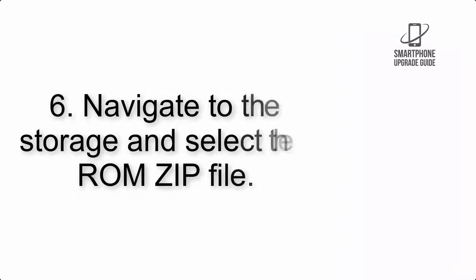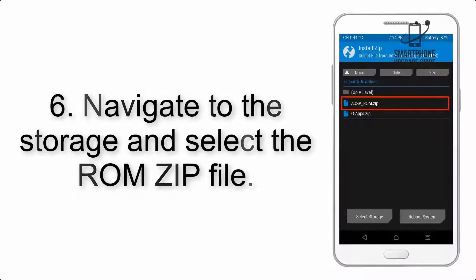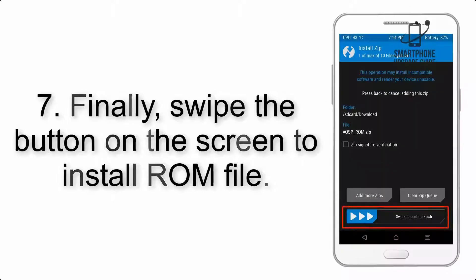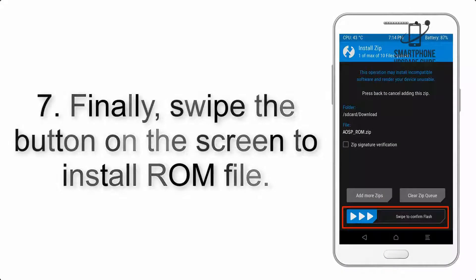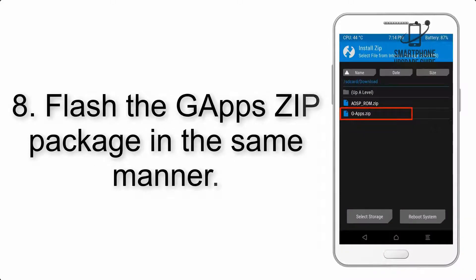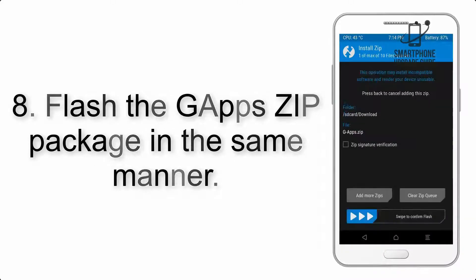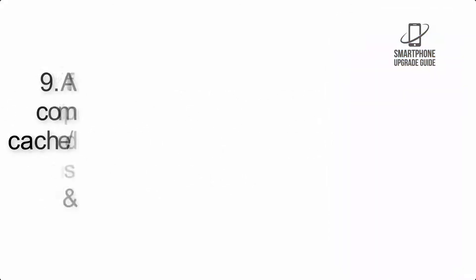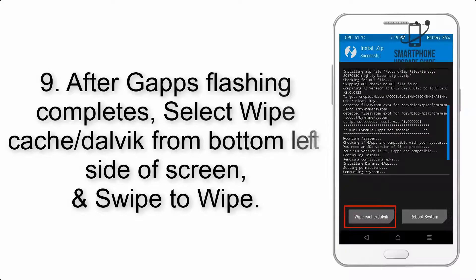Step 5: Go back to the recovery main screen and tap on the Install button. Step 6: Navigate to the storage and select the ROM zip file. Step 7: Finally, swipe the button on the screen to install the ROM file.